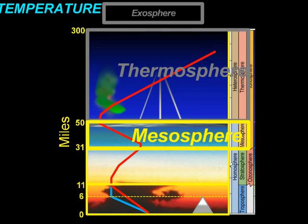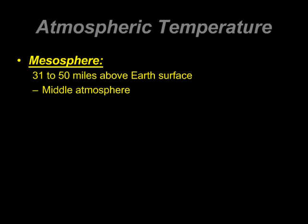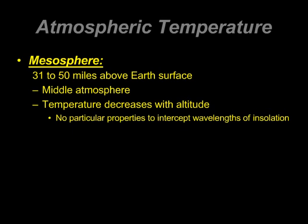Looking at the red line in the mesosphere, you can see that as we go up, temperature goes down — unlike the thermosphere where temperature goes up with altitude. The mesosphere spans 31 to 50 miles above Earth's surface, also known as Earth's middle atmosphere. Temperature decreases with increasing altitude here. One characteristic of the mesosphere is there are no particular atomic reactions occurring — none of those wavelengths of long wave or short wave are being intercepted here, so none of the heat reactions seen in the thermosphere.